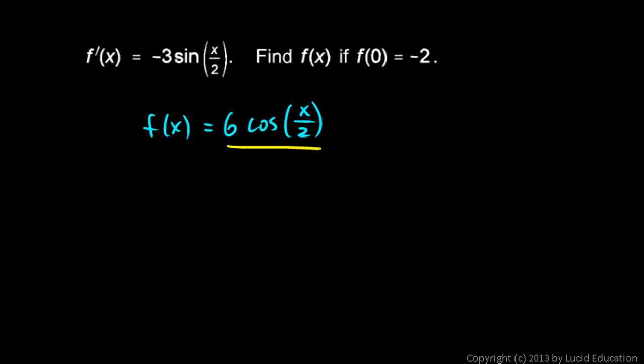So I'll erase this. So if this is the derivative, this is the function. And then we need to put a plus C on there. Now what we're trying to do is figure out what number this actually is in this case, and we can find that out because we're given this piece of information right here. I know that if x is 0, if I put in a 0 right here for x, that this will come out to be negative 2. So let's write negative 2 is 6 times cosine of 0 over 2 plus C. And now the only thing unknown in here is C, so we can find that.